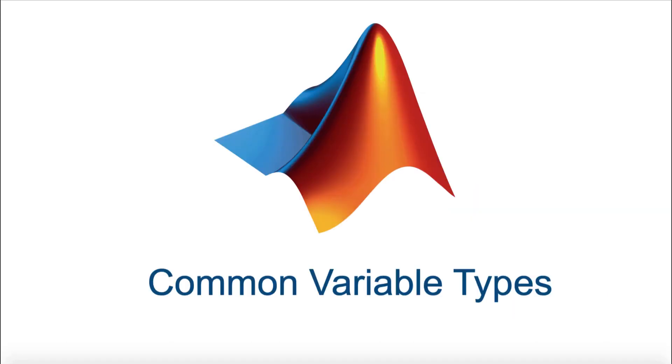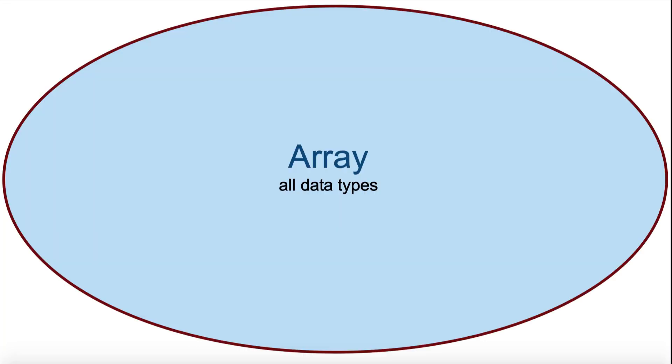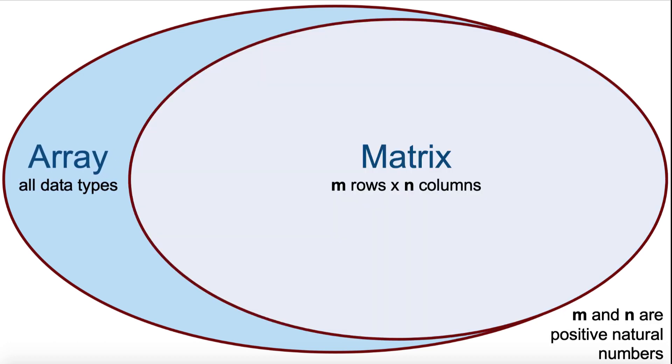Let's start this video by clarifying some commonly used variable types in MATLAB. An array is an all-encompassing term. All variables of all data types in MATLAB are multi-dimensional arrays. Within that definition, a two-dimensional array of numbers with multiple rows and multiple columns is called a matrix.